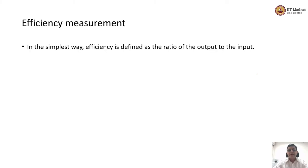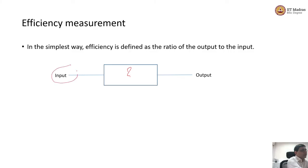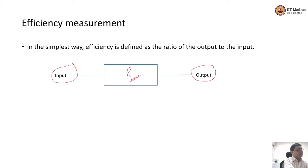Let us quickly understand how we are going to measure this efficiency. In the simplest possible way, efficiency is defined as a ratio of output to input. A simple diagrammatic representation: you input something into a process — it could be a production process, a service process, or anything — and you get some output. We are not going to worry about what happens inside; that is a black box. We only worry about how much input goes in and how much output comes out.